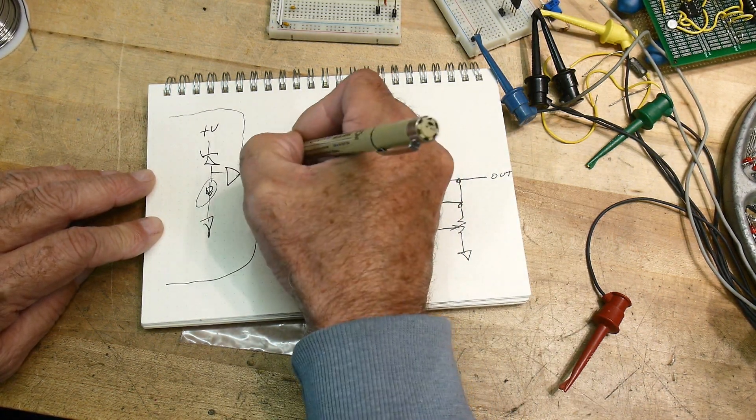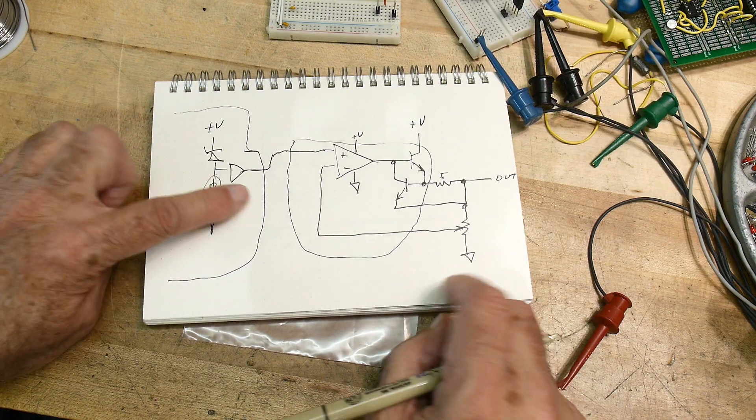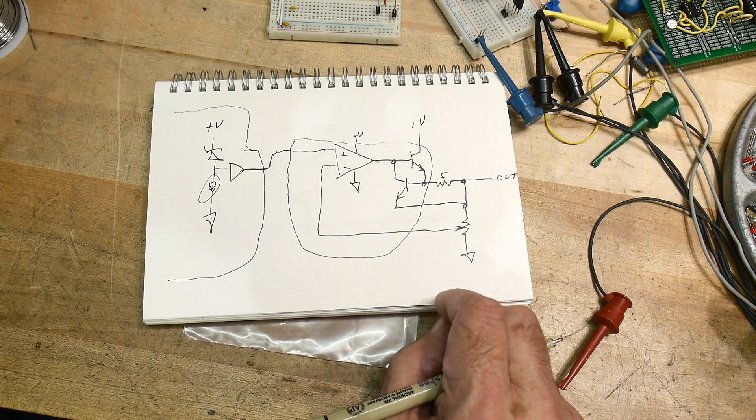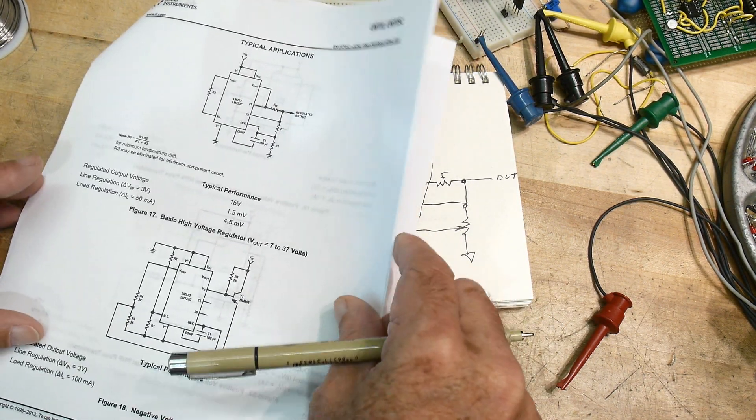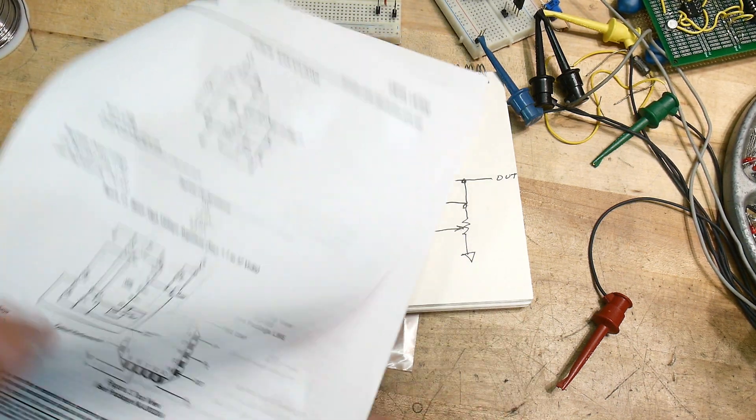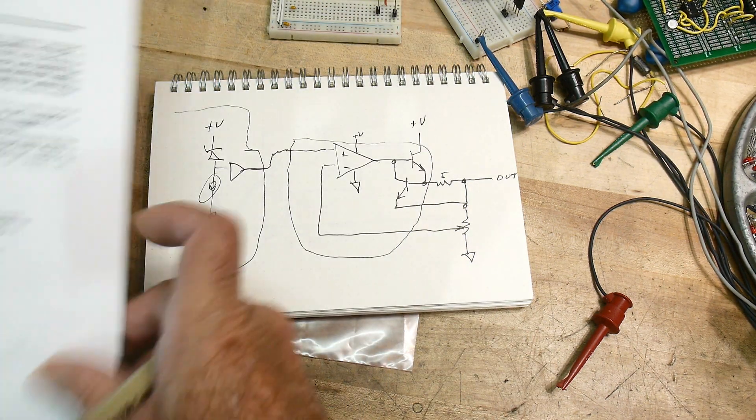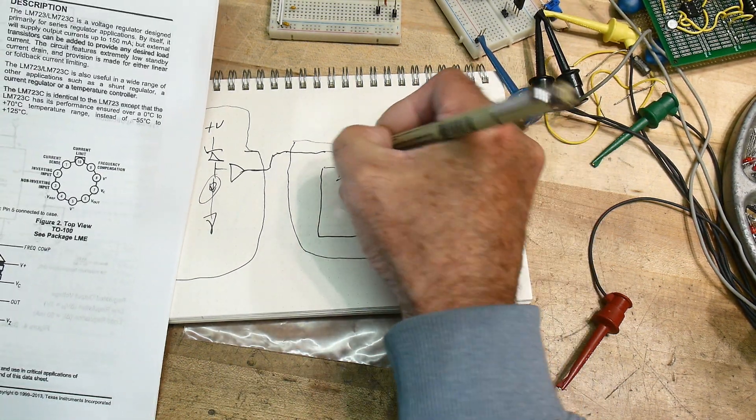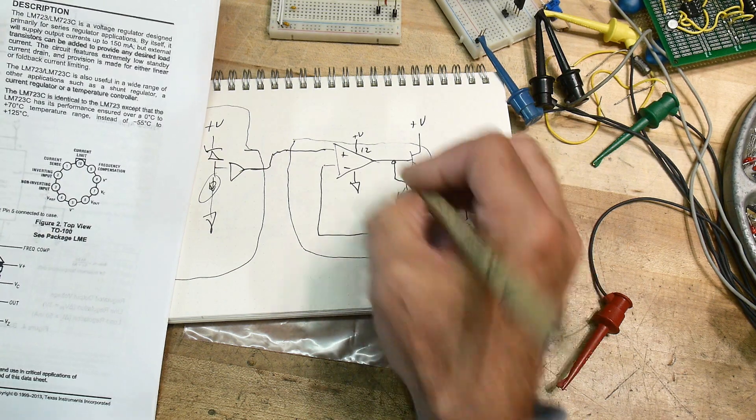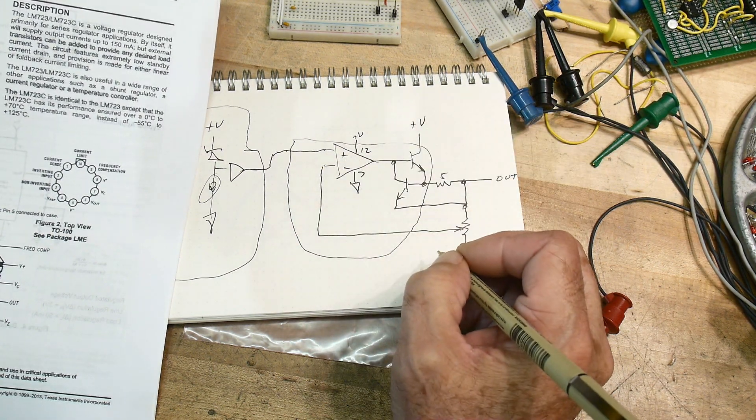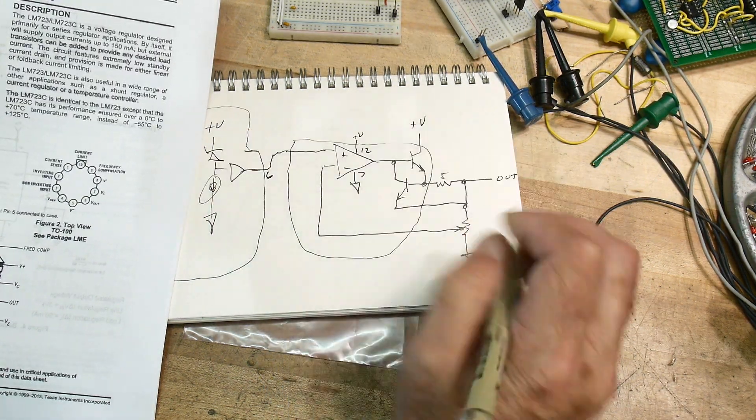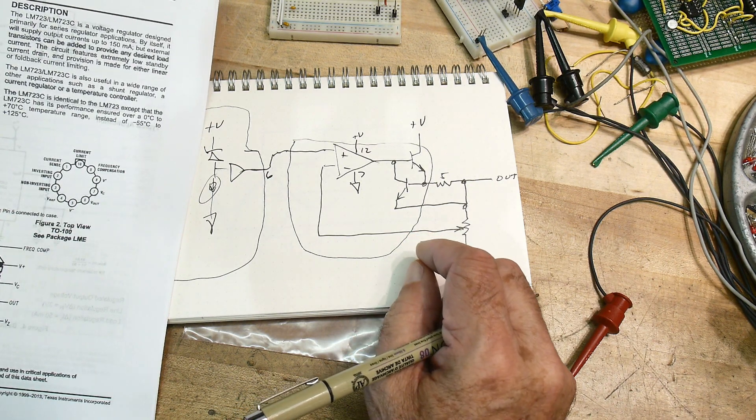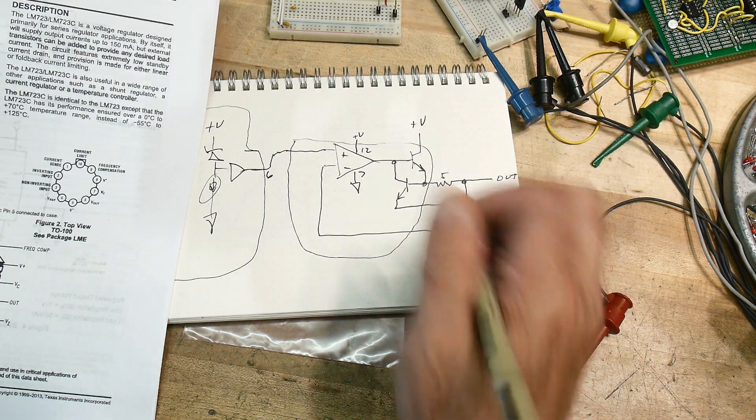We're going to bring this around over here. So let's see here on our datasheet. Plus V is going to come in on pin 12. Ground is going to be on pin 7. The output's going to be on pin 6. The non-inverting is going to be on 5.